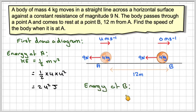So the energy at B will be, again, kinetic half times 4 times 0 squared, which is obviously 0 joules.